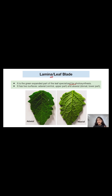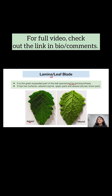A leaf has two surfaces: a top surface and a bottom surface. The upper part of the leaf is known as the adaxial surface. It can also be called the ventral or upper part of the leaf.